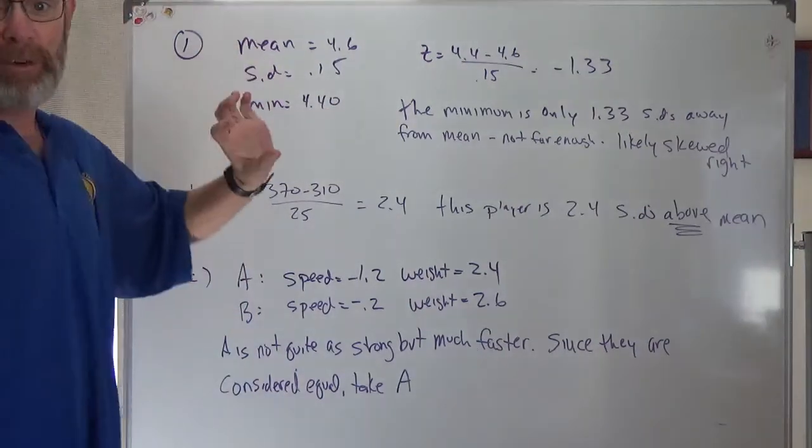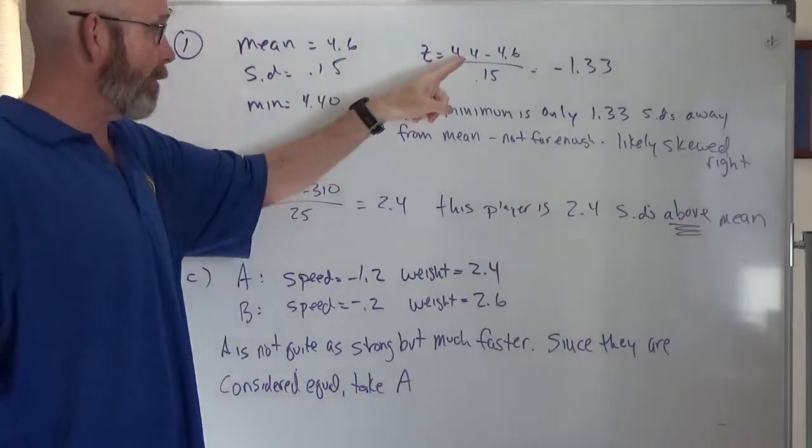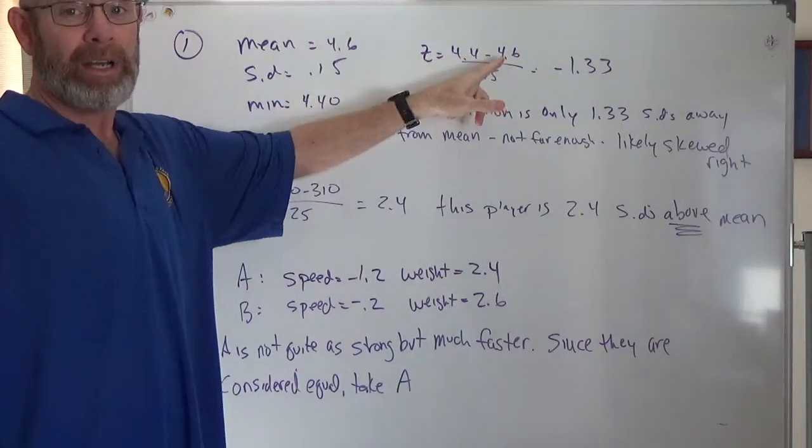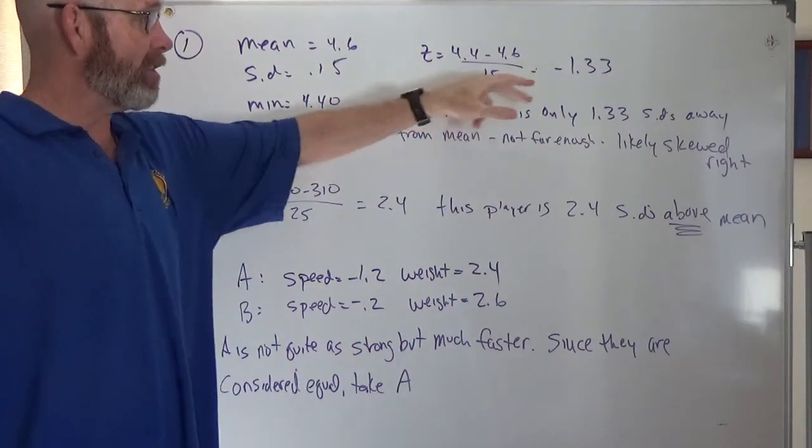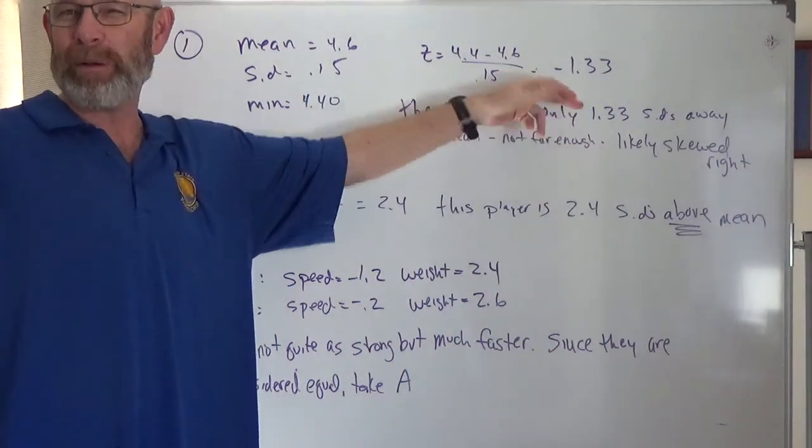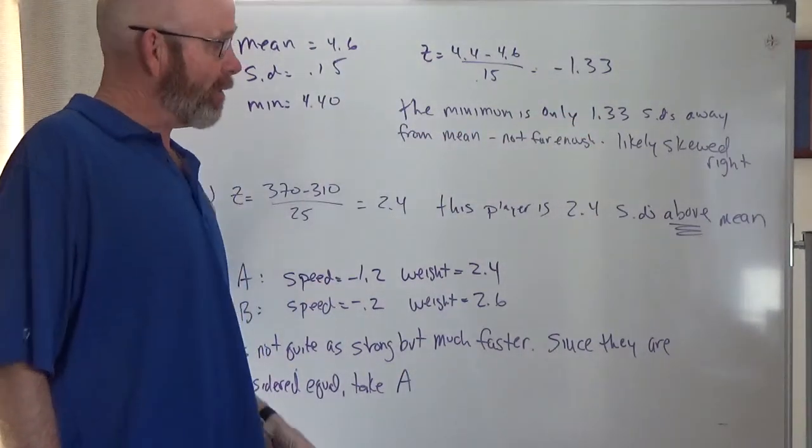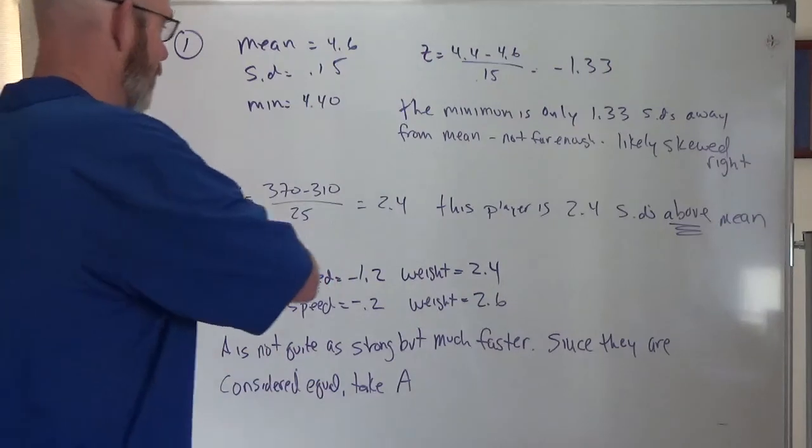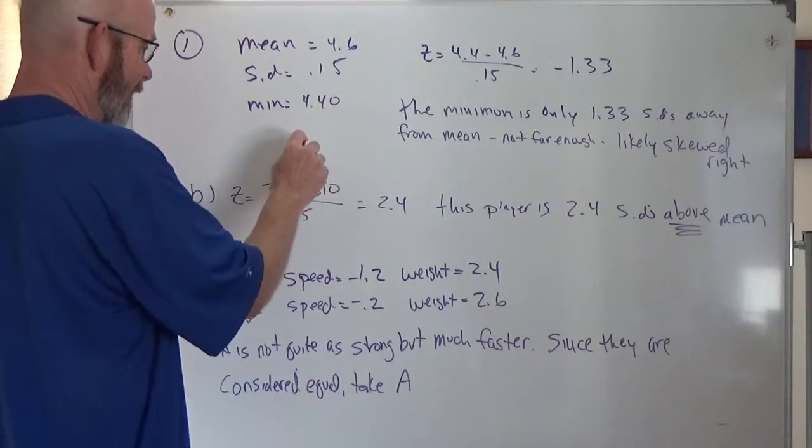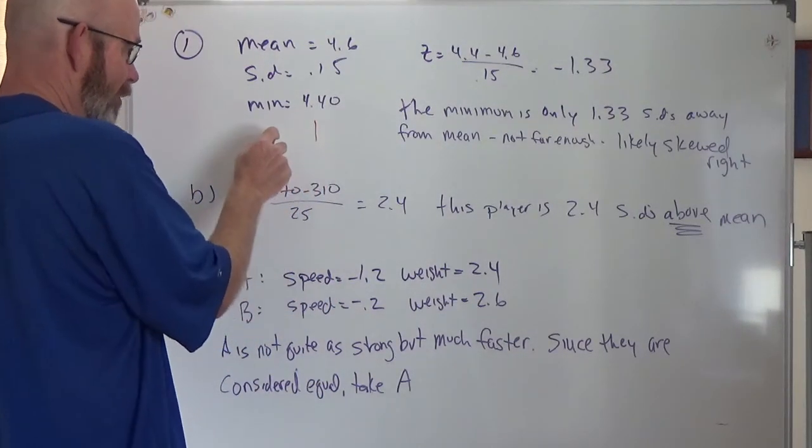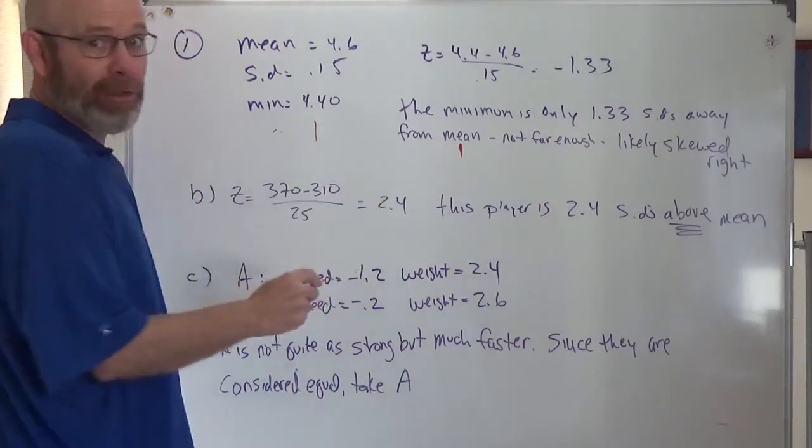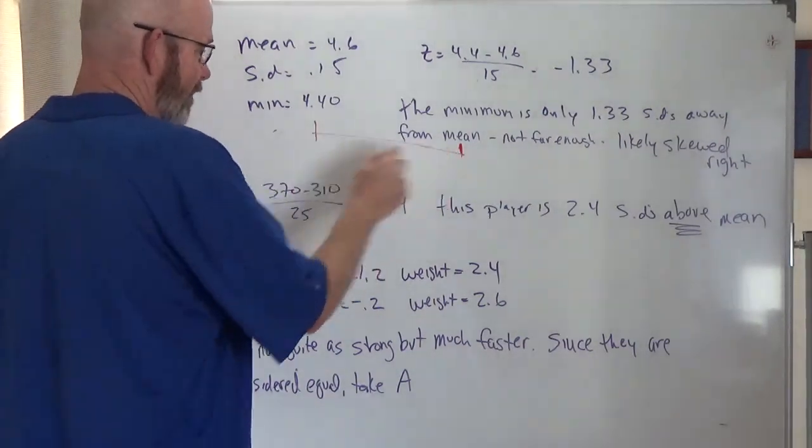So they only want you to use this information. So what I did was I took the minimum point, 4.4, subtracted the mean divided by standard deviation to figure out how many standard deviations away from the mean that minimum point was. And the minimum point is only 1.33 standard deviations away from the mean, which means in order to have all our data in there, if I'm here, I'm not going over very far this way, I'm going to wind up going farther that way, right? So it's likely skewed right.